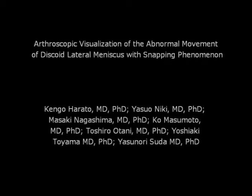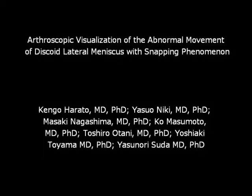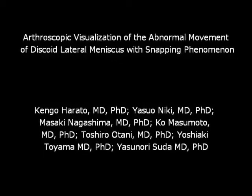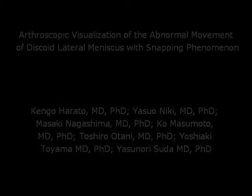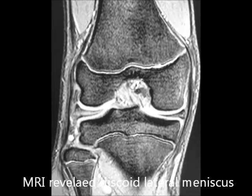This video introduces arthroscopic visualization of the abnormal movement of discoid lateral meniscus with snapping phenomenon. The first case is a 13-year-old male whose chief complaint is symptomatic snapping with motion on his right knee. MRI reveals discoid lateral meniscus with horizontal tear.